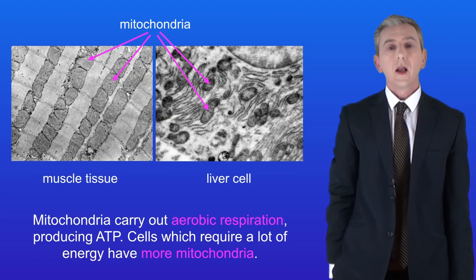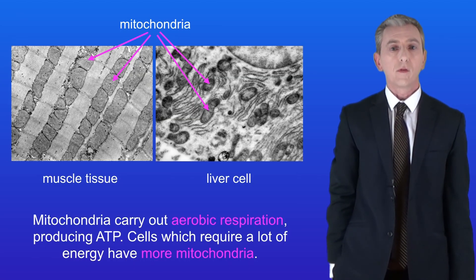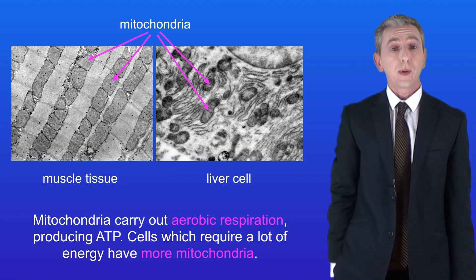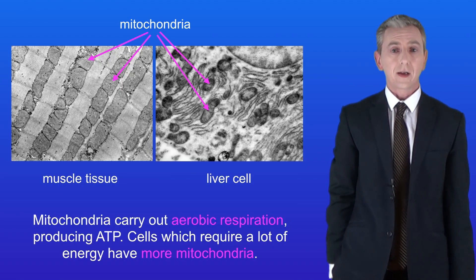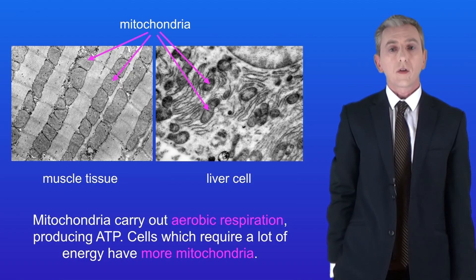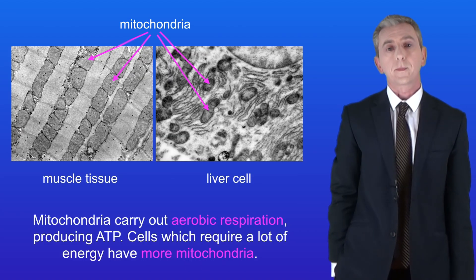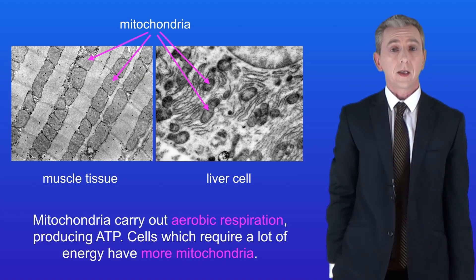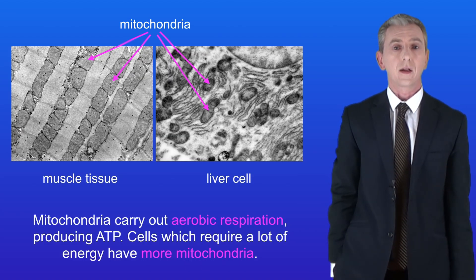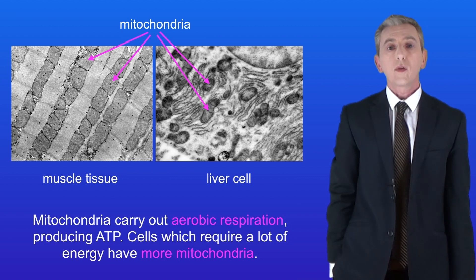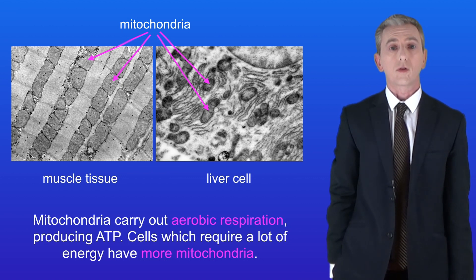As we said at the beginning, mitochondria carry out aerobic respiration, producing ATP which the cell uses to release energy. Cells which need a lot of energy tend to have more mitochondria. We can see that in muscle tissue and in liver cells — both of these require a lot of energy and both have a lot of mitochondria.